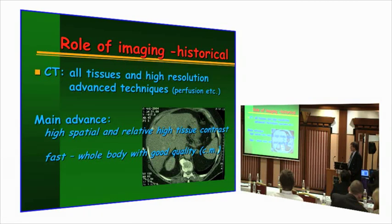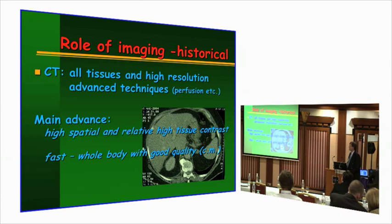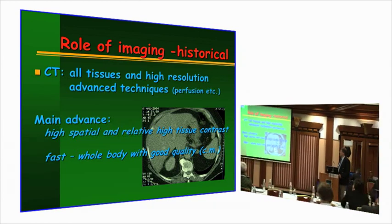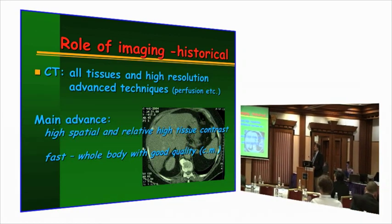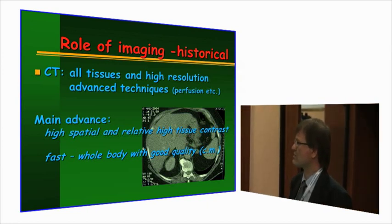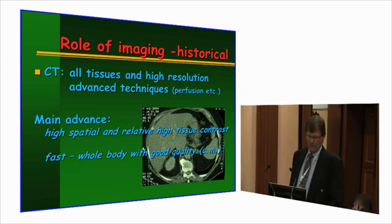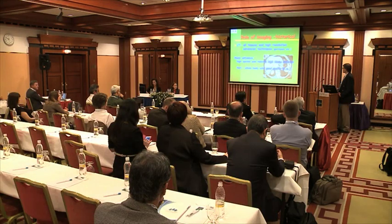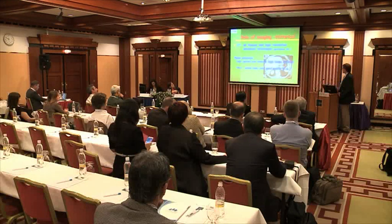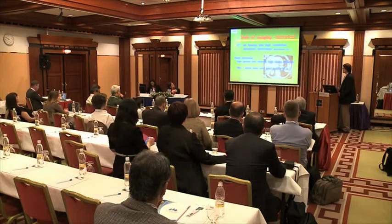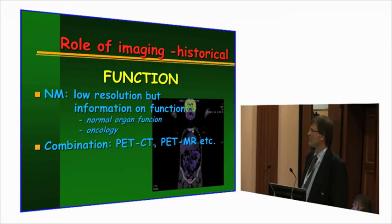Another step was computed tomography — CT — which already enables us to see very good soft tissue contrast. It's only about 40 years old; it was introduced in 1973. But in the last 20 years it has shown very fast further development. With CT, still based on morphology, we see very good spatial resolution and relatively high tissue contrast. It's fast, and it enables us to use contrast materials to see the dynamics — for example, the perfusion of tumor tissue.